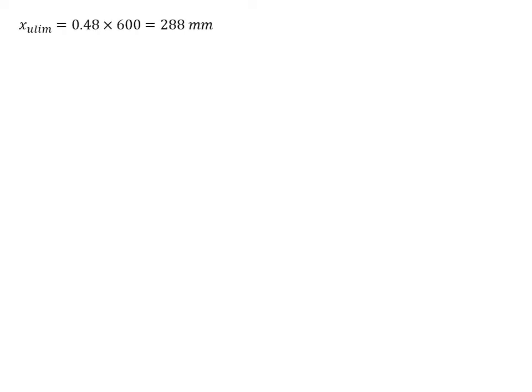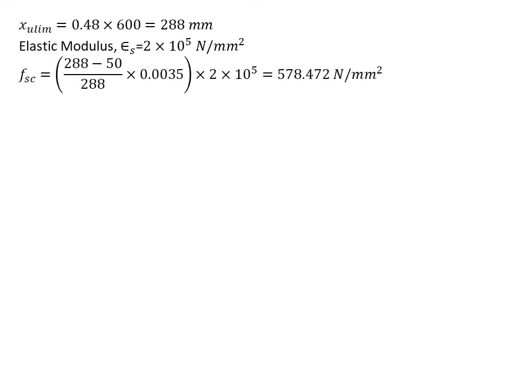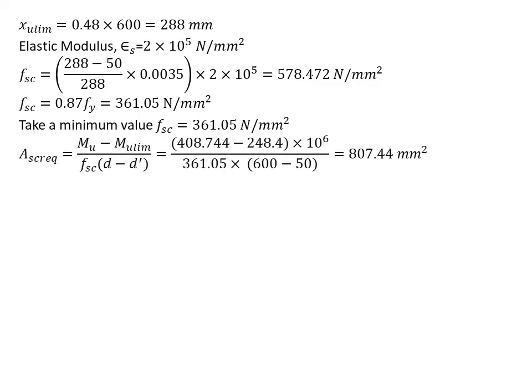Xu limit's value is 0.48 × 600 which equals 288. Elastic modulus for steel is 2×10⁵ N/mm². fsc equals, we substitute the values, and we get 578.472 N/mm². That is the first formula. Second formula: fsc equals 0.87fy, that is 361.05 N/mm². We take the minimum value and we get 361.05 N/mm² as fsc's value.